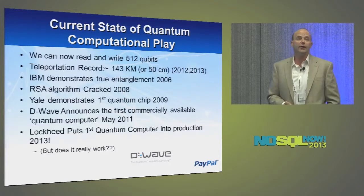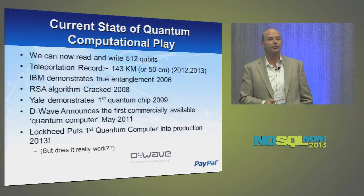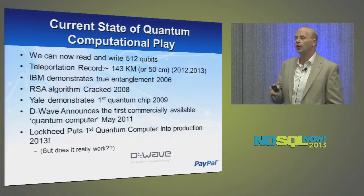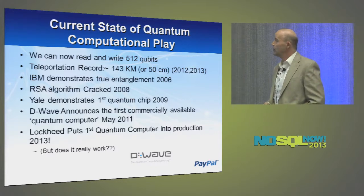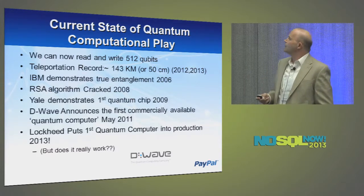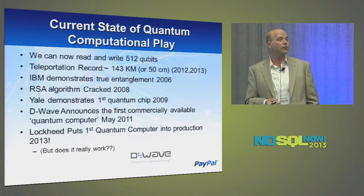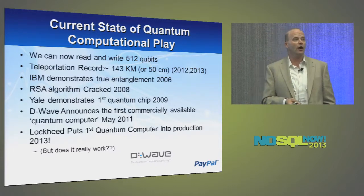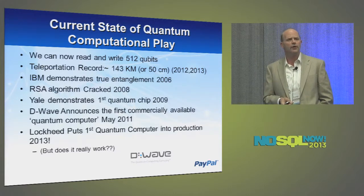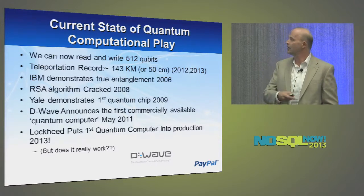What's our current state in quantum computation? I mean, this all sounds like science fiction. It's all real, it's here. Google is actually going to run one. We can read and write 512 qubits. The D-Wave quantum computing — I think it's the D-Wave 2 model — now has a 512 qubit chip. You can buy it.